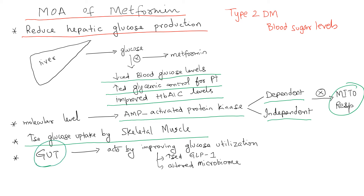New research shows that metformin has an effect on the gut as well. In the gut, it helps improve glucose uptake and glucose utilization, as shown by increasing GLP-1 levels and also altering the microbiome concentration in the gut, which ultimately has an effect on blood sugar levels.